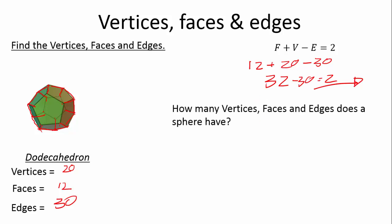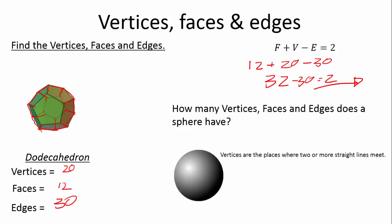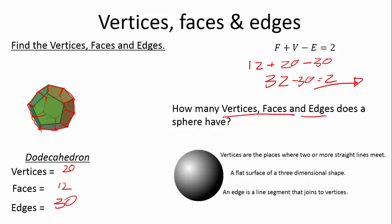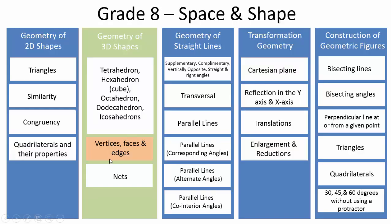How many vertices, faces, and edges does a sphere have? Vertices are where two or more straight lines meet — there are no straight lines on a sphere. An edge is a line segment joining two vertices — none here. And a face is a flat surface of a three-dimensional shape. So a sphere does not have any vertices, edges, or faces.